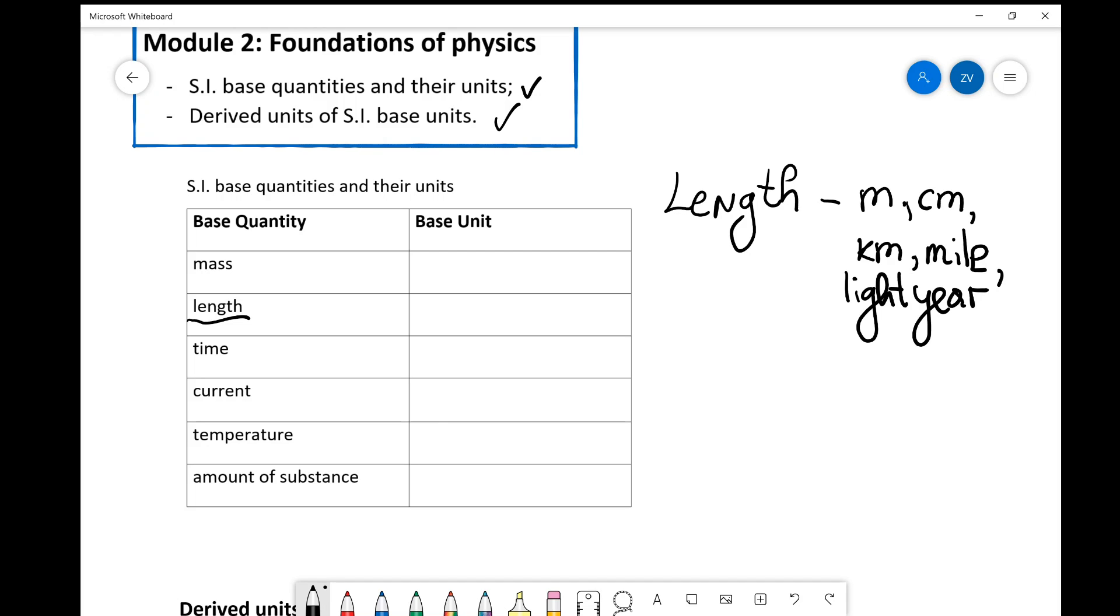And here are those units. For mass the base unit is a kilogram. For length the base unit is a meter. For time it's the second, current it's the amp. For temperature it's the Kelvin. Notice that it's not degrees Celsius, and particularly in the second year of physics we're going to be looking at the Kelvin scale in a little bit more detail. And finally for the amount of substance we have the mole.